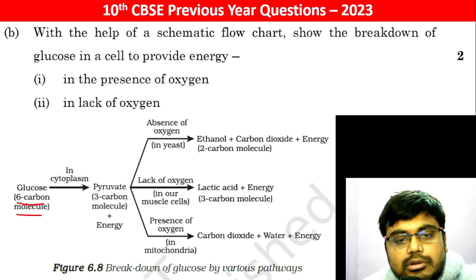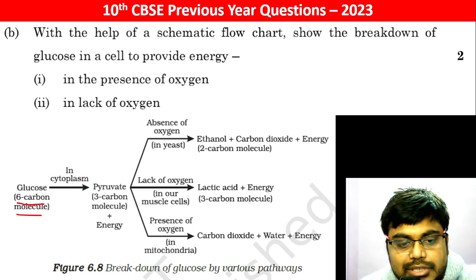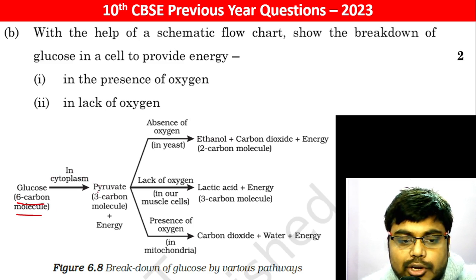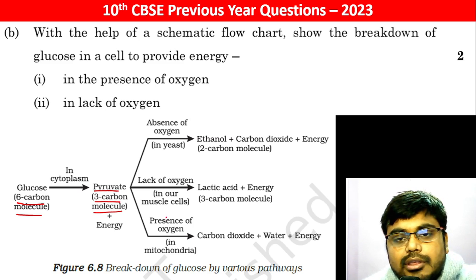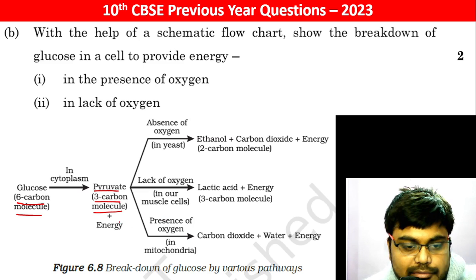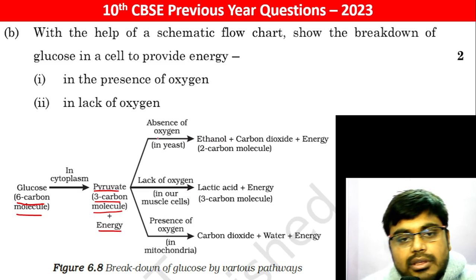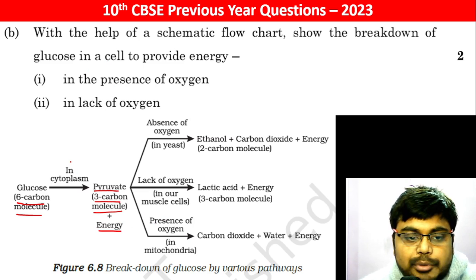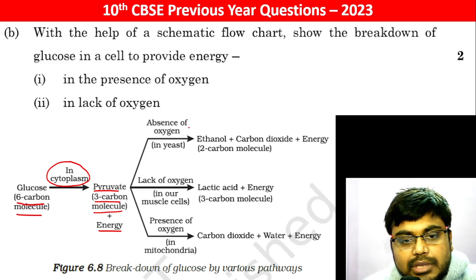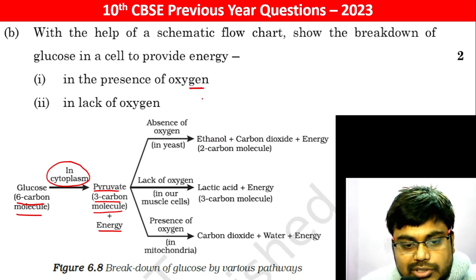In the cytoplasm, the glucose gets broken down into pyruvate, which is a three-carbon molecule, and then energy is released. Here in the cytoplasm, in the presence of oxygen, when oxygen is present...